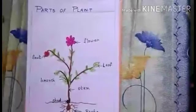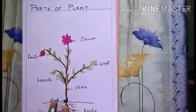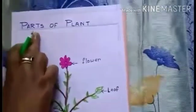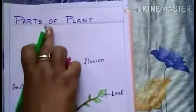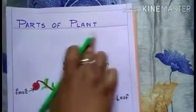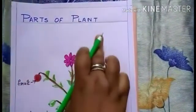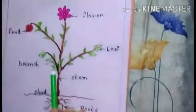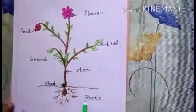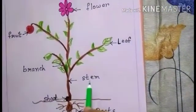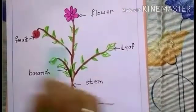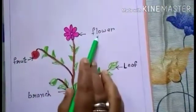In the given picture, we will name the parts of the plant. Children, see here the parts of the plant: root, shoot, stem, branch, leaf, fruit, flower.